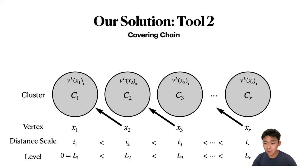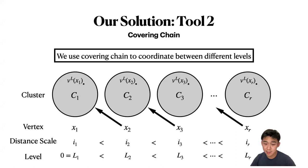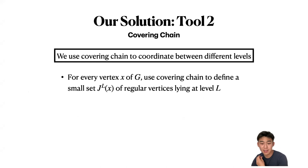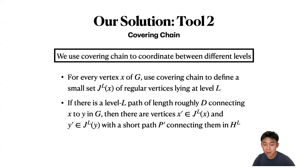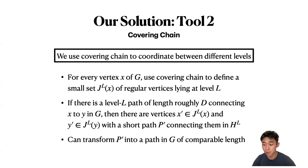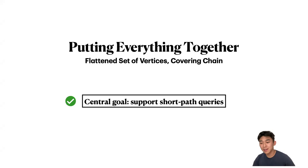The second tool is something called a covering chain. Intuitively, a covering chain is a sequence of clusters and vertices spanning through many different levels, defined in a specific way so that they can be computed efficiently. These structures spanning different levels allow us to coordinate between them. Concretely, for every vertex X of G, we use covering chains to define a small set J_L(X) of regular vertices at level L, and show that if there is a level-L path of length roughly d connecting X to Y in G, then there are vertices X' in J_L(X) and Y' in J_L(Y) with a short path P' connecting them in H_L. We can also transform P' back into a path in G of comparable length. This completes the high-level overview of our reduction from fully dynamic APSP to Rec-DynNC.